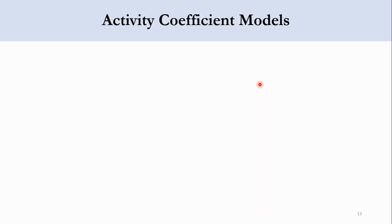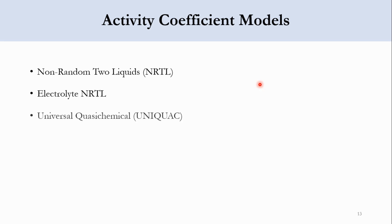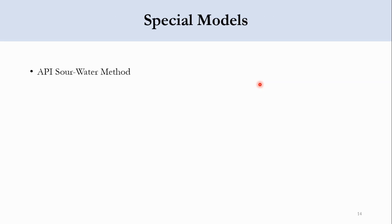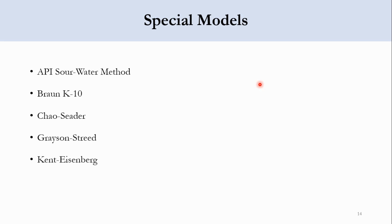In the activity coefficient model we studied NRTL (non-random two-liquid), UNIQUAC, UNIFAC, electrolyte NRTL, Wilson, and Flory-Huggins. In the special model category: API Sour Water method, BK10, Chao-Seader, Grayson-Streed, Kent-Eisenberg, and Steam Tables.